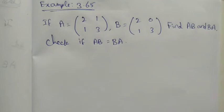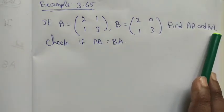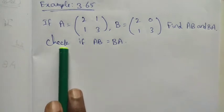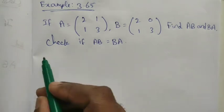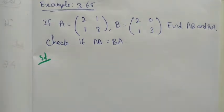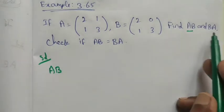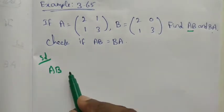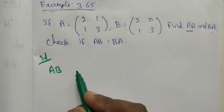Students, class 10 example from 3.65: if A and B are two matrices, find AB and BA. Check if AB is equal to BA. We want to check if the resultant of AB and BA are equal or not equal. First we define the matrices and find AB, then find BA.